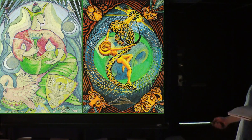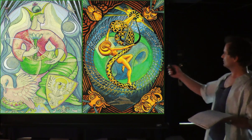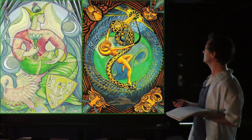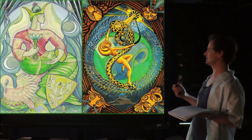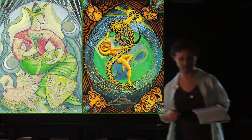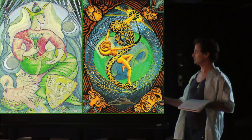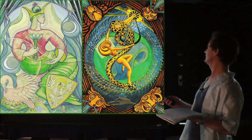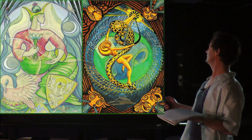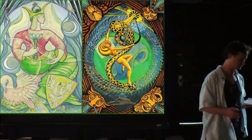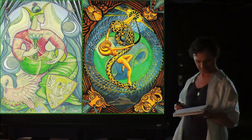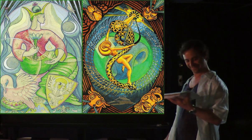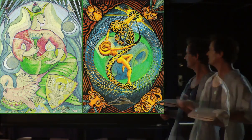That's part of why Crowley changed this word to adjustment from justice. In the book of the law, it says all these old letters of my book are right, but Tzaddi is not the star. This replaced the Heh's in Yod-Heh-Vav-Heh with the star, which is a goddess. So it equalized the genders in the tetragrammaton, which is absolutely one of the most essential components of the future of humanity to realize.